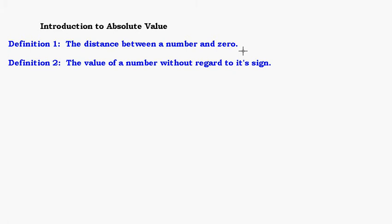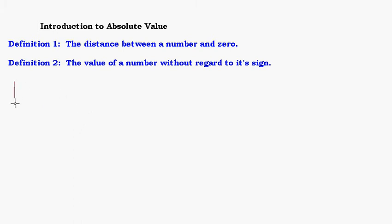The symbol for absolute value looks like this — it's two bars, two vertical lines. So if I want to take the absolute value of something, I put it between those bars. Let's say I want to do the absolute value of three. These are not parentheses, these are not brackets — these are straight up-and-down vertical lines.